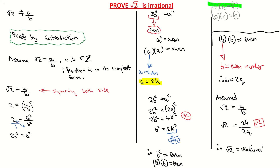And that's what we wanted to prove — that the square root of 2 is irrational. This same method also holds for the square root of 3 or the square root of 5; the example here just used the square root of 2.